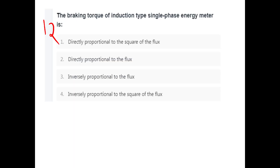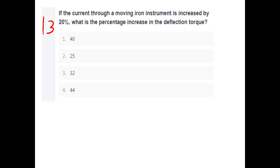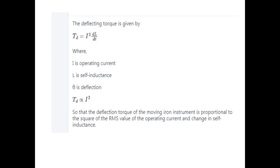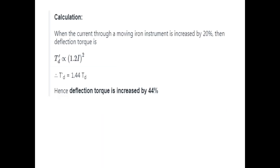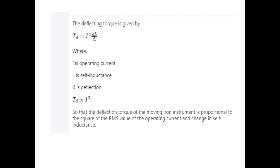Breaking torque of an induction type single-phase energy meter is directly proportional to the square of the flux. If the current through a moving instrument is increased by 20%, what is the percentage increase in deflecting torque? The deflecting torque T_D is proportional to I². If current increases by 20%, then T_D increases by 44%, because T_D is proportional to I squared — (1.2)² = 1.44, which is a 44% increase.